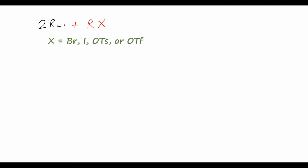Let's look at the reaction. We have two equivalents of an organolithium reagent and one equivalent of a halide or pseudohalide, so we need a good leaving group — usually bromine, iodine, triflate, or tosylate work really well. We treat this with copper(I) iodide in a solvent like diethyl ether or THF, and this gives us the cross-coupled product RR', along with byproducts: the lithium salt of the halide, lithium iodide from the copper iodide, and an RCu species.